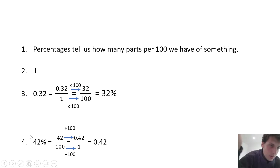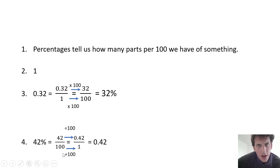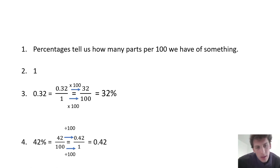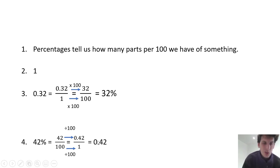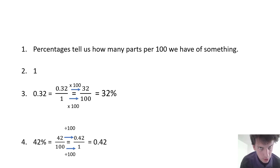Now the next one: what is 42% as a decimal? A decimal is out of one, and a percentage is out of a hundred. So we need to make our percentage out of one — divide by a hundred. Whatever I do to the bottom, I've got to do to the top. So 42 divided by a hundred is 0.42 — that is our decimal. So 42% as a decimal is 0.42. Well done — I'm sure most of you have done exceptionally well. If you haven't done as well as you'd like, please send me any emails and I can give you some support.